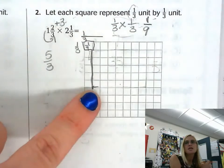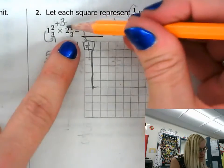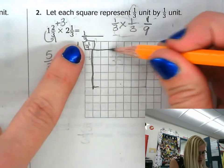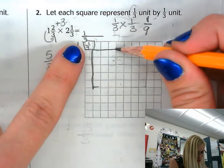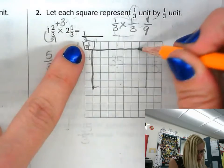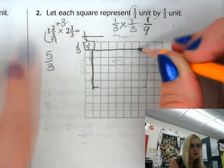Perfect. So now what I'm going to do is I'm going to do the same thing going across. I need to have two and one third. So one third, two thirds, three thirds is one whole. One third, two thirds, three thirds is two whole, and then I'm going to go across one more third as represented there.